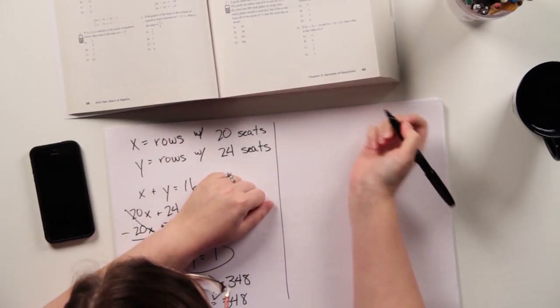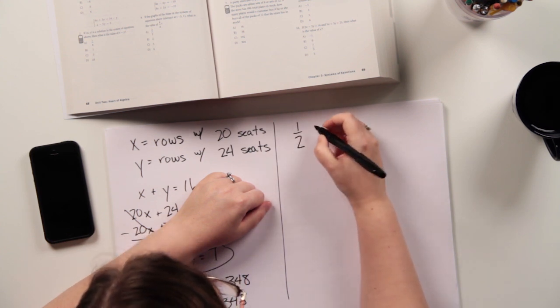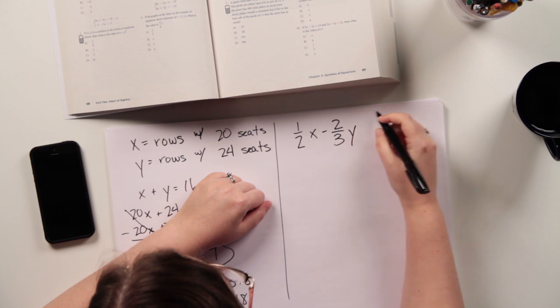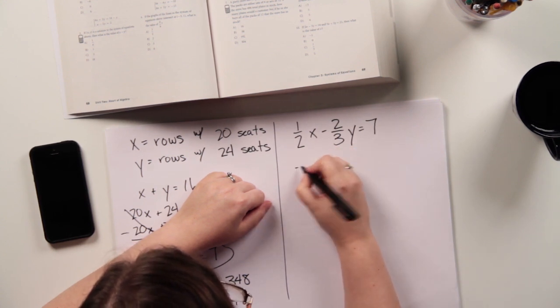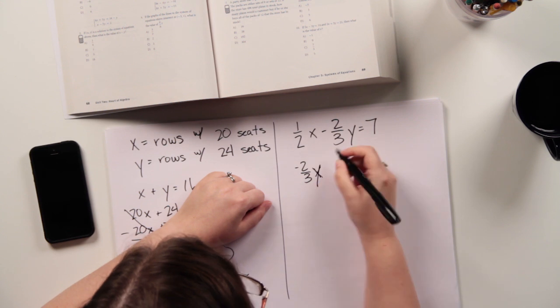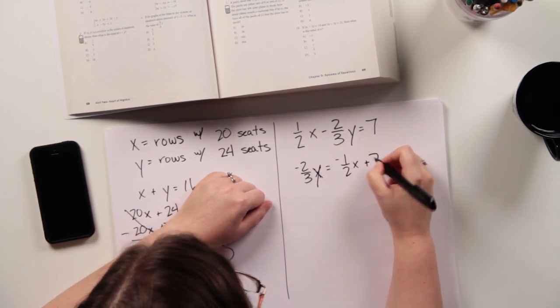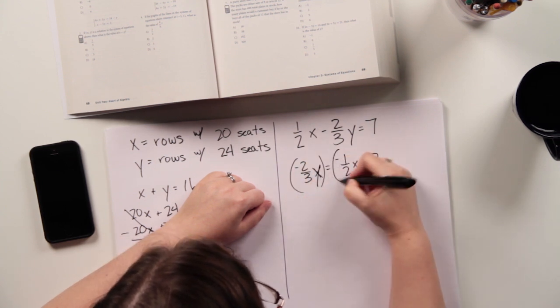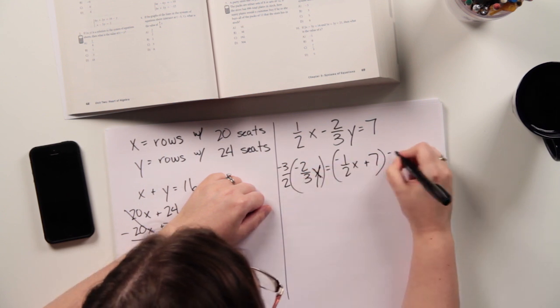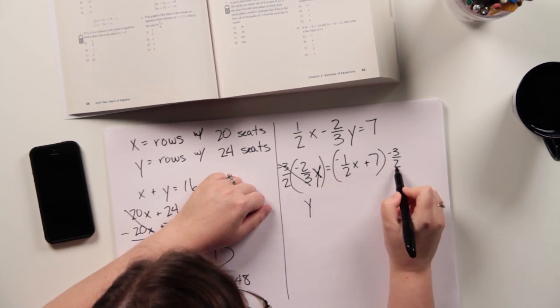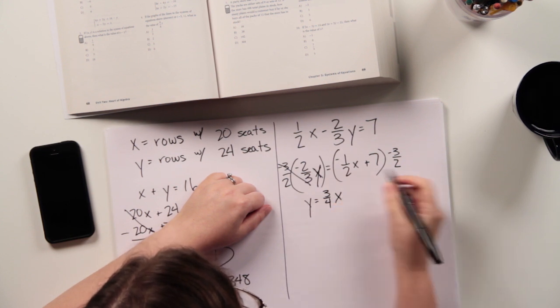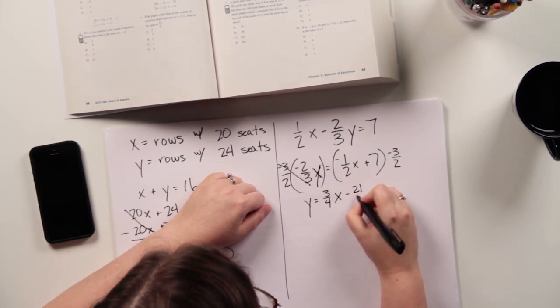So I'm going to put these both in slope-intercept form and see what I get. So for the first one, I've got negative 1 half x minus 2 thirds y equals 7. So if I move my x over, I get negative 2 thirds y equals negative 1 half x plus 7, and then I multiply both sides by negative 3 halves. So these guys will cancel each other out and I'll just have y. Negative 3 halves will give me 3 fourths x plus minus 21 halves, which isn't really the part that I care about. I want to know about that number in front of the x.